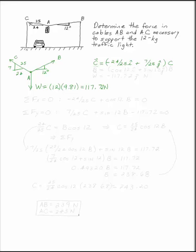The vector B we're given with an angle is cosine 12 I plus sine 12 J times its magnitude, whatever it is. And the weight we know is 117.72 in the negative J direction.